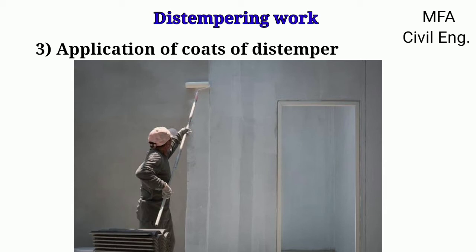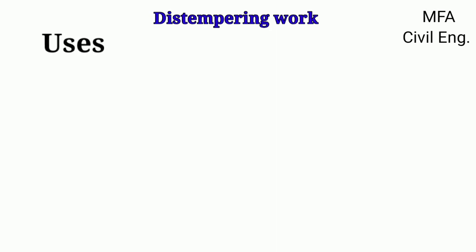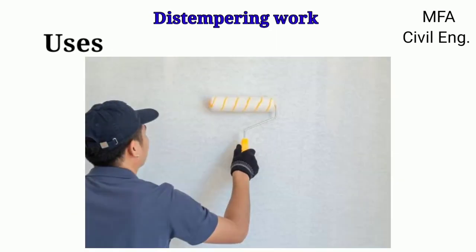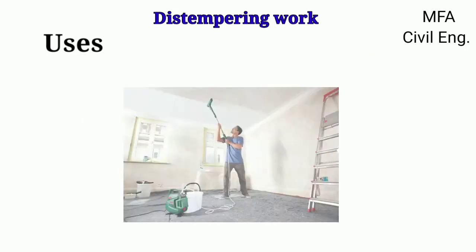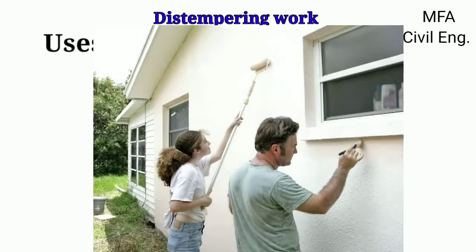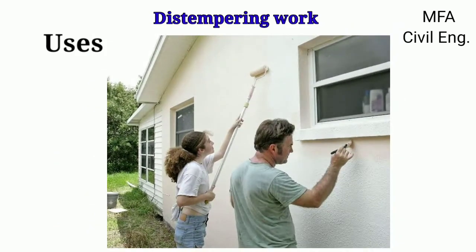For better results, distempering should be done in dry weather. Distemper is used as a finishing coat on plastered surfaces for interior walls, whitewash surfaces for interior walls, and external surfaces of brickwork and concrete after adding a weather-resisting compound at the time of mixing.